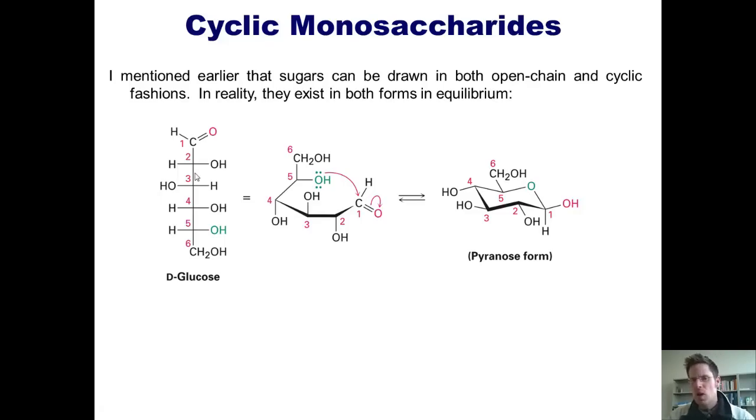Now when a sugar is drawn in a nice six-membered ring structure, it's called a pyranose form. I'm going to talk in a few slides about something else called the furanose form.